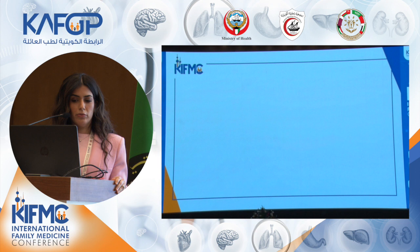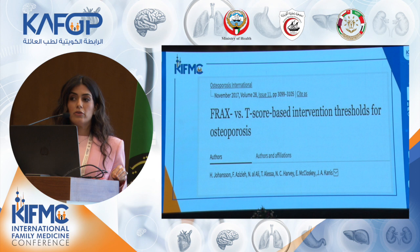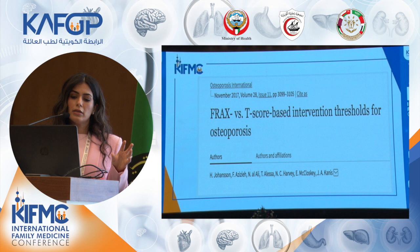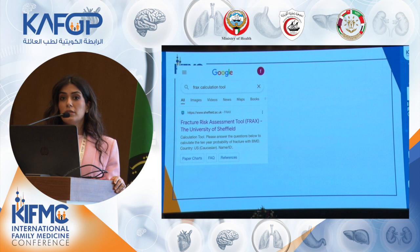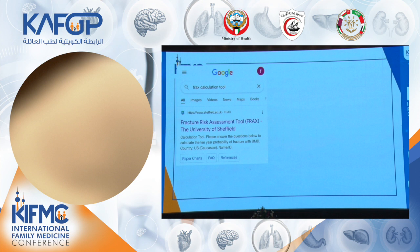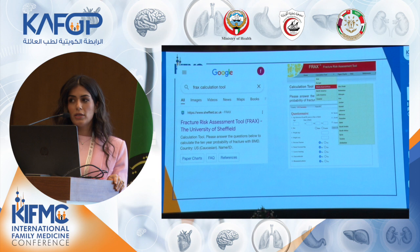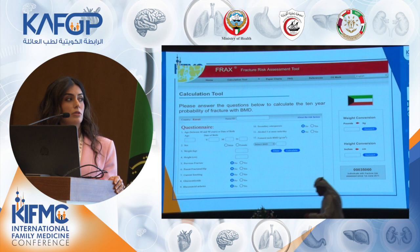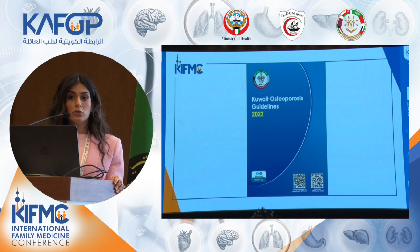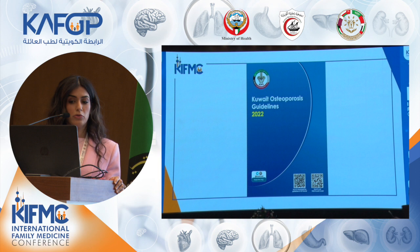In 2016, a FRAX specific for Kuwait was developed and released, published to compare the FRAX with T-score-based intervention thresholds for the treatment of osteoporosis. It is easily obtained by going online and searching the FRAX tool, then choosing Kuwait from the drop-down menu — this is the tool you use in your clinics and it takes only two minutes to screen patients. The FRAX tool was incorporated into Kuwait's osteoporosis guidelines developed by the Kuwait Osteoporosis Society in 2018 and updated in 2022.